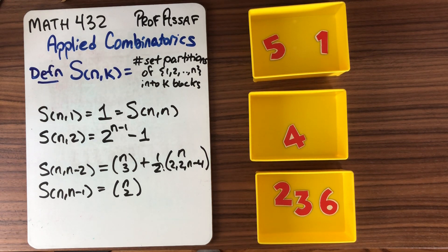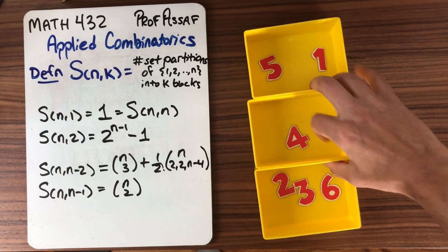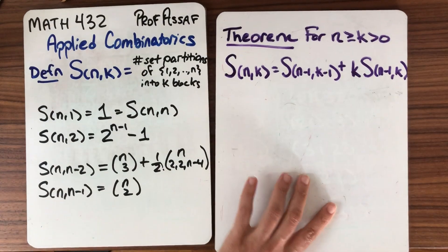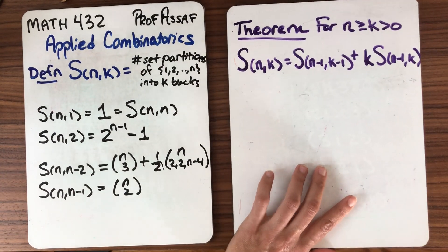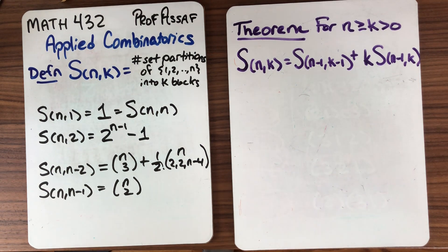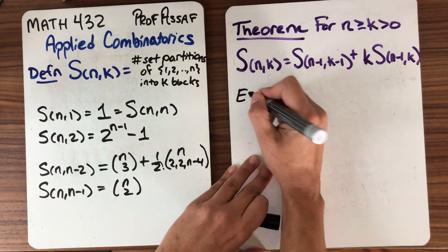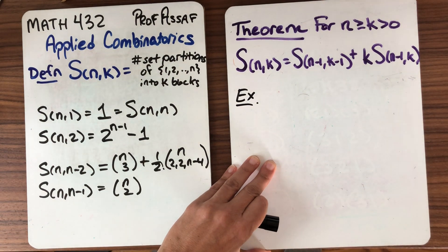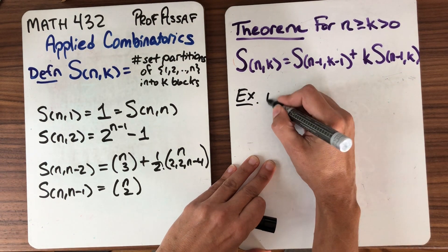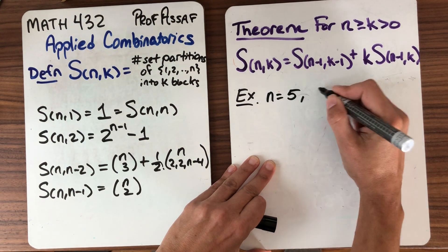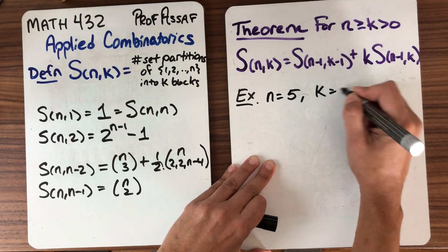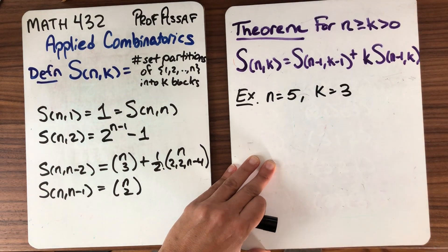Something interesting about the Stirling numbers: how do we compute them? We can actually compute them with a recurrence relation. We're going to talk about these recurrence relations. Before we prove it, let's do an example to see that it makes sense. So here's an example with N equals 5 and K equals 3, a pretty reasonable size.